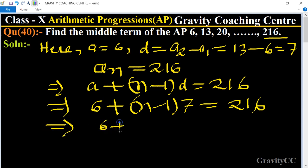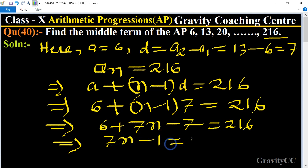Implies that 6 plus 7n minus 7 equal to 216, implies that 7n minus 1 equal to 216.